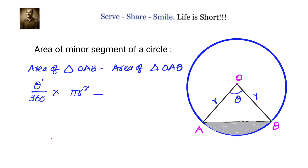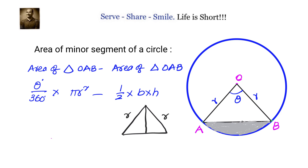Now the area of triangle OAB we have to calculate. It is half into base into height. Let us take the triangle — we have two sides of length r, a central angle of theta, split into theta/2 on each side. The base is divided into two equal parts and this is the height.